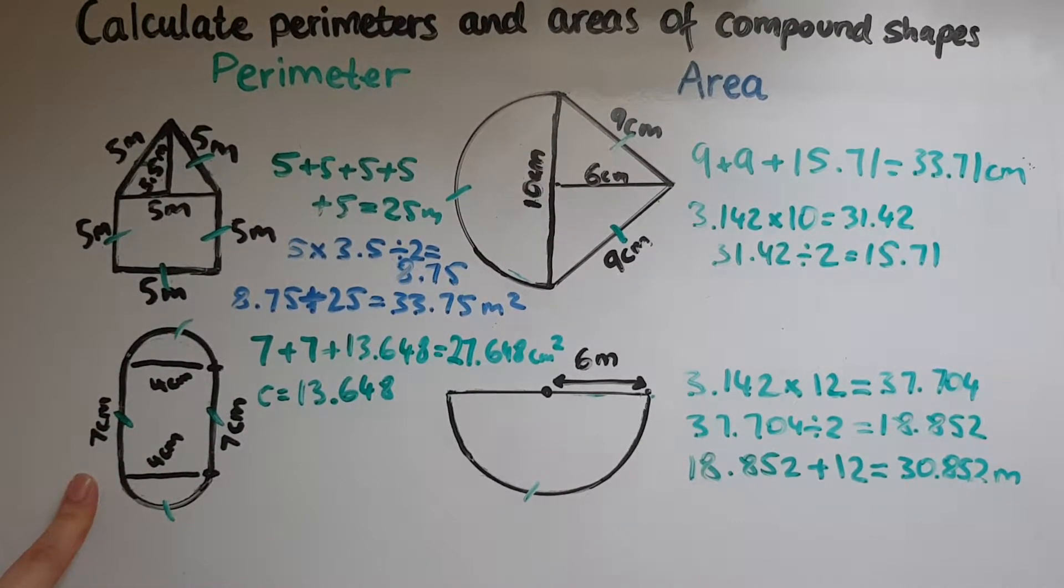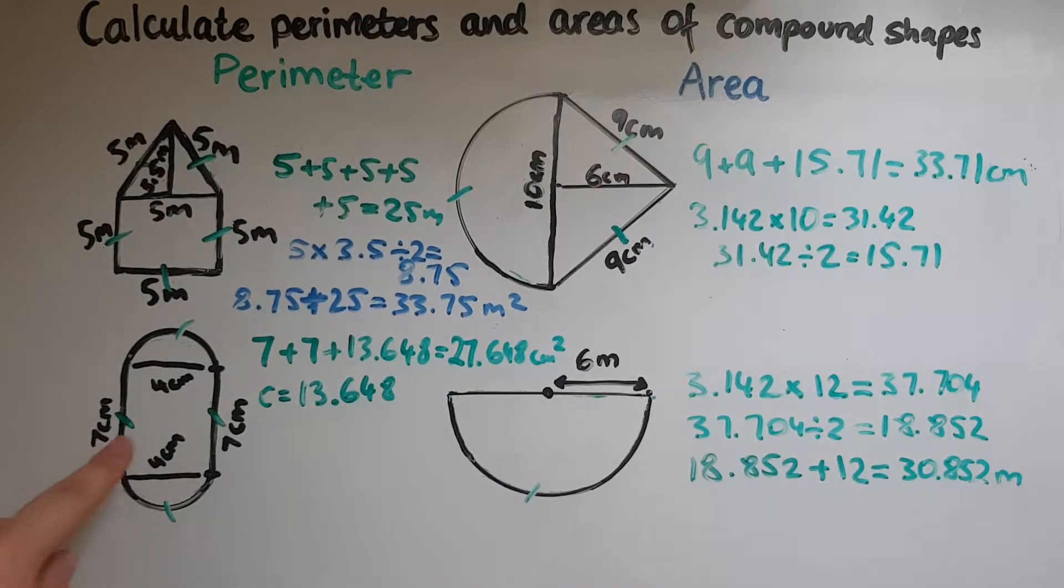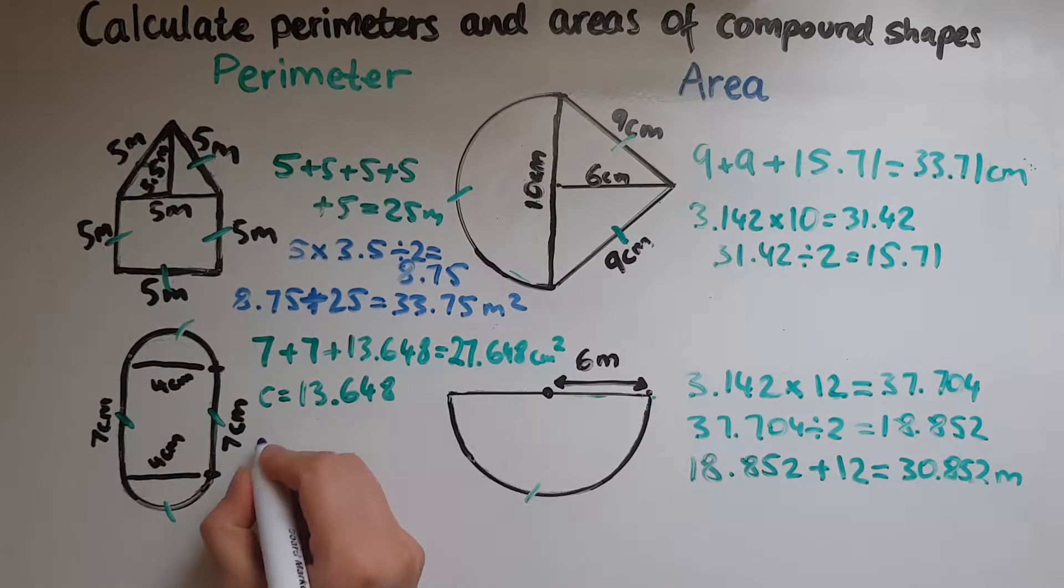Now the next shape is made of a rectangle which we can work the area of by multiplying four times seven and then the circle. We've got two half circles together which make a full circle, so we'll get the area of the circle first.